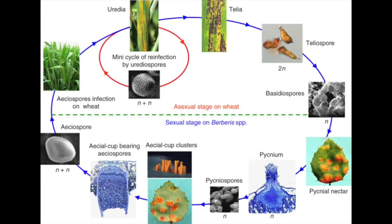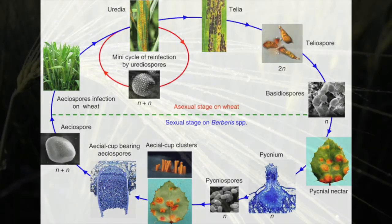It is also a polycyclic disease and has more than one repeating spore cycle in a season. Stripe rust is macrocyclic and has all five spore types including basidiospores, pycniospores, aeciospores, urediniospores, and teliospores.